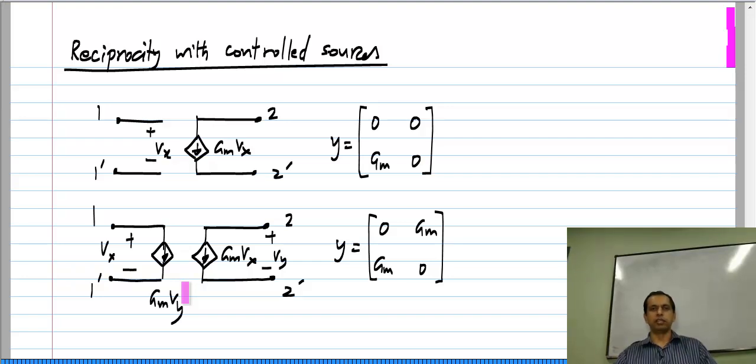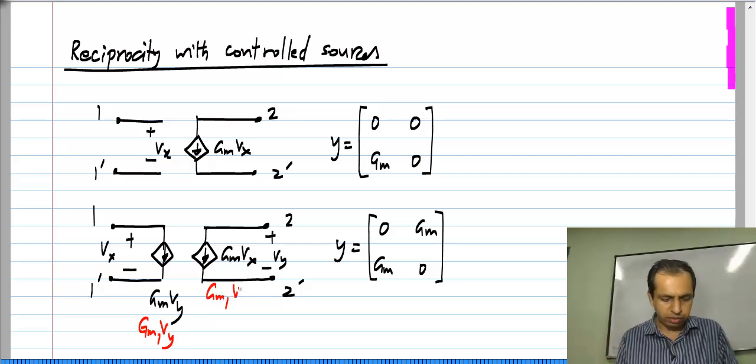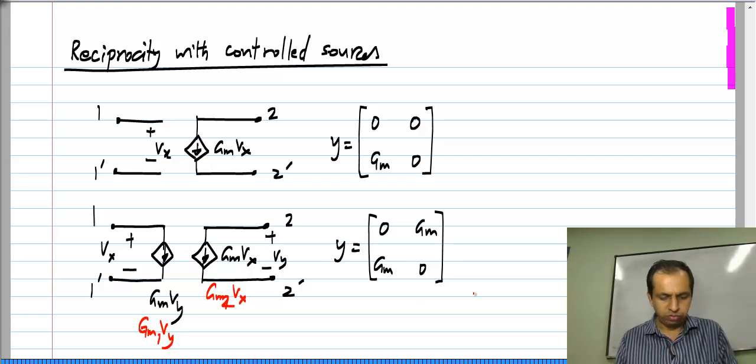The most trivial case is when every resistor in your resistive network is implemented using controlled sources. Even if you do not do that, even if you do not use controlled sources to realize equivalent resistors, you can make them reciprocal. Now in this particular case, let us say instead of GMVY, we had GM1VY, and here I had GM2VX.